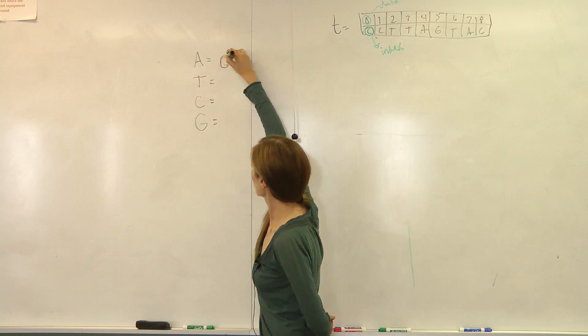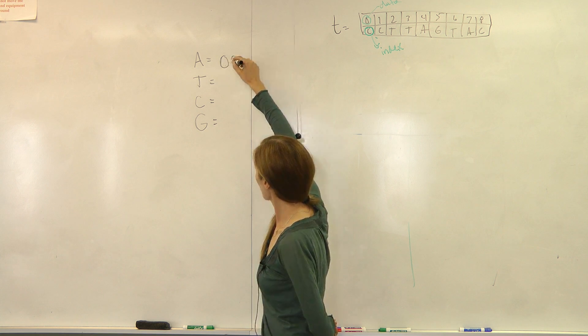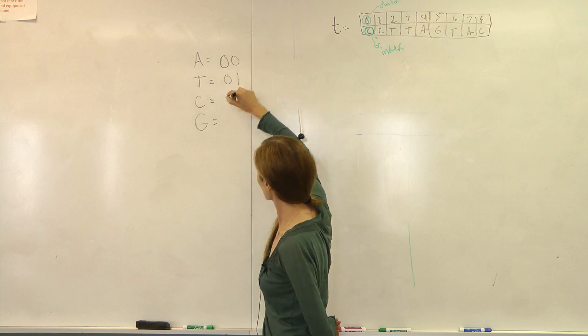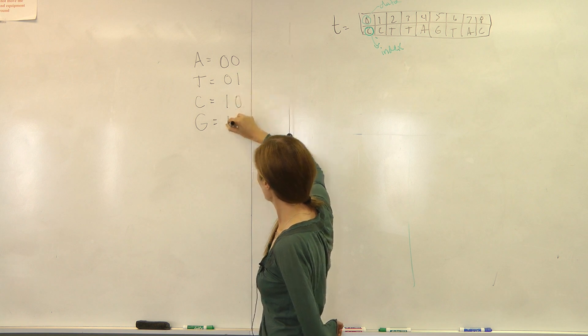So for example, you could represent your A as 00, T is 01, C is 10, and G is 11.